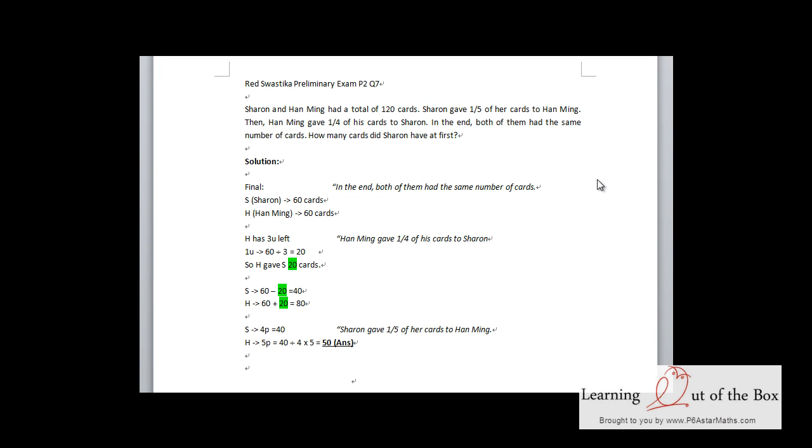Sharon and Han Ming had a total of 120 cards. Sharon gave one-fifth of her cards to Han Ming. Then Han Ming gave one-quarter of his cards to Sharon. In the end, both of them had the same number of cards.